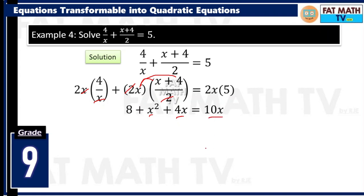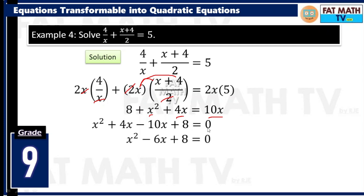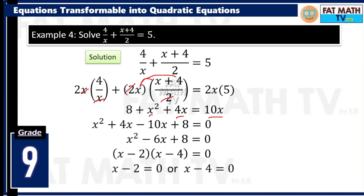Since this is a quadratic equation, write in standard form. x squared plus 4x, and positive 10x moved to the left becomes negative 10x, plus 8 equals 0. Combining: 4x minus 10x is negative 6x. Factor x squared minus 6x plus 8 equals 0 — you get x minus 2 times x minus 4. So x minus 2 equals 0 or x minus 4 equals 0, giving x equals 2 or x equals 4.